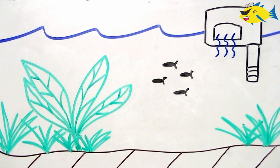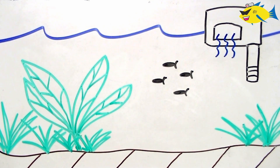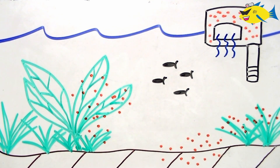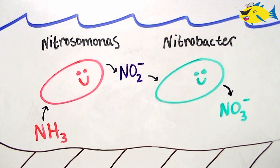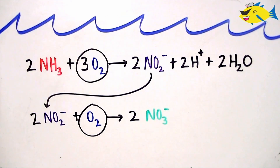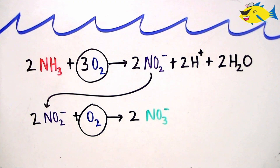To review: nitrification is a vital process in the aquarium that is responsible for the detoxification of ammonia. It takes place primarily in your filter but also happens throughout your tank. This process is performed by the teamwork of two bacteria in the genus Nitrosomonas and Nitrobacter. Oxygen is a limiting factor in nitrification, so make sure your aquarium is well aerated to promote its efficiency.